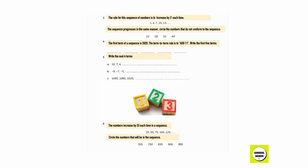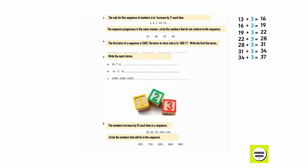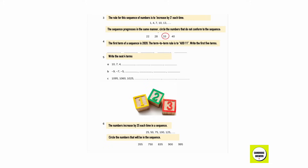The sequence continues in the same way. Circle the numbers that are not in the sequence: 22, 28, 33, and 40. Starting from 13, adding 3 each time gives: 16, 19, 22, 25, 28, 31, 34, 37, 40. So the number not in the sequence is 33 — instead of 33, 34 needs to be there.